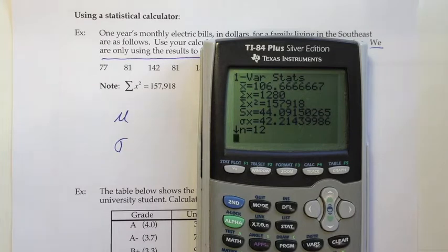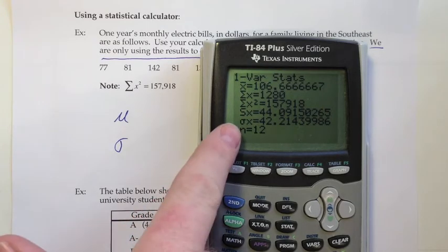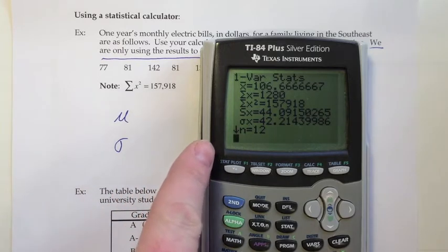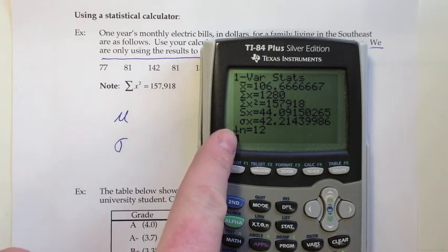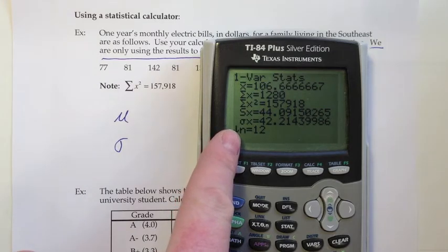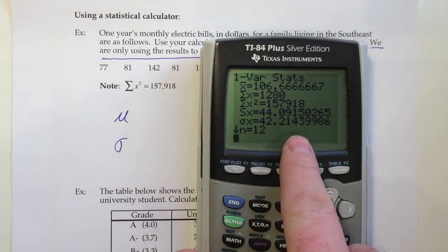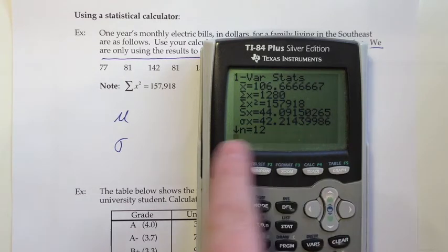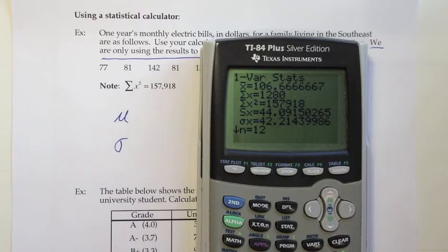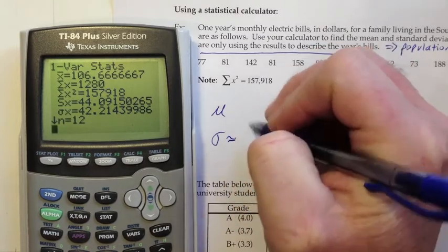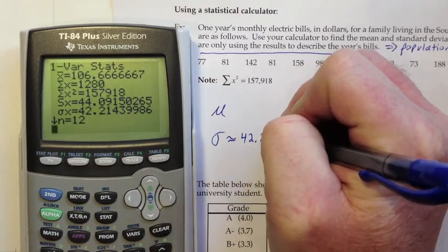Alright, so we want the mean and standard deviation. We've decided that this is population data, so we want mu and sigma. And I see sigma right here. They label it as an x, but we just put a sigma. That's in case you had multiple variables, an x and a y, you would have a sigma for your x's and a sigma for your y's. Since we don't have multiple variables, we'll just refer to it as sigma. And so that's going to be 42.214 if I go out 1, 2, 3, 4, 5 digits. And I'm going to round there, so I'm going to say approximately. So let me write that one down. I'm going to move this over a little bit. So sigma is approximately 42.214.